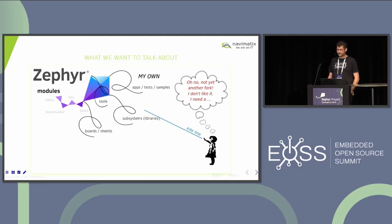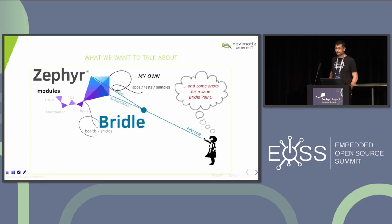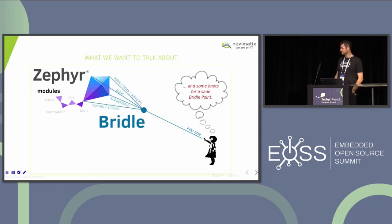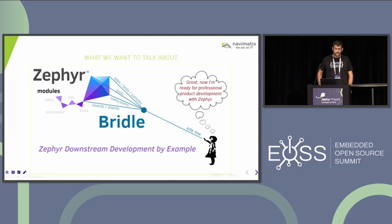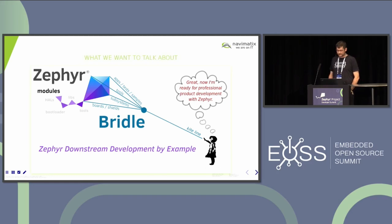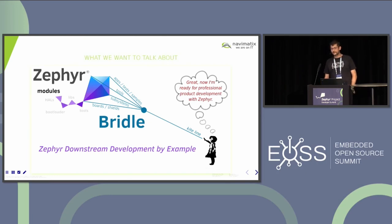I have named it your kite line. What you need on a real kite is any point where you bind all together. That's the reason why we named this project Bridal. And on the end, what Bridal will be for you is an example — exactly a Zephyr downstream development example — where you can learn what is the best practice or what is the thing you will need, at least, to start your product development in a professional environment.